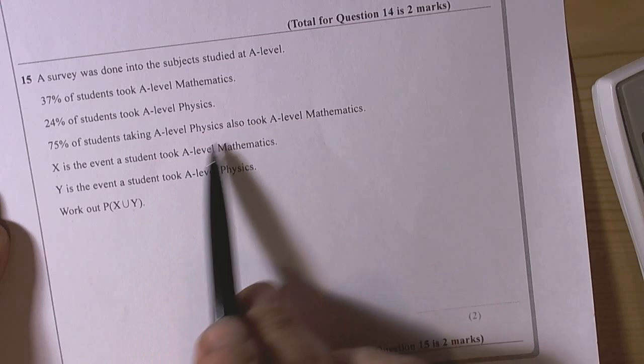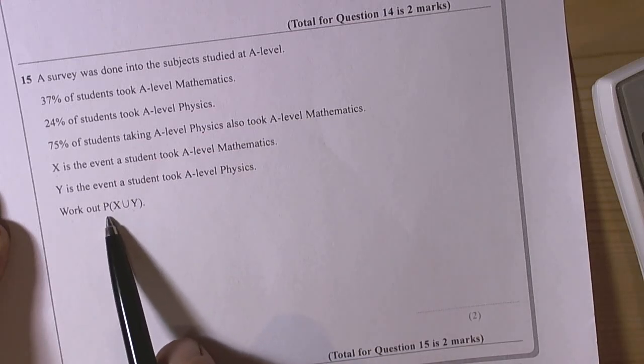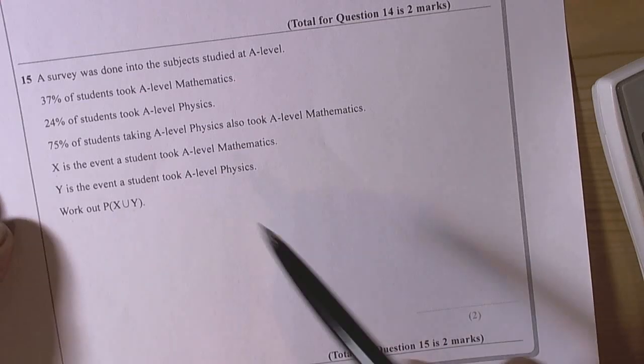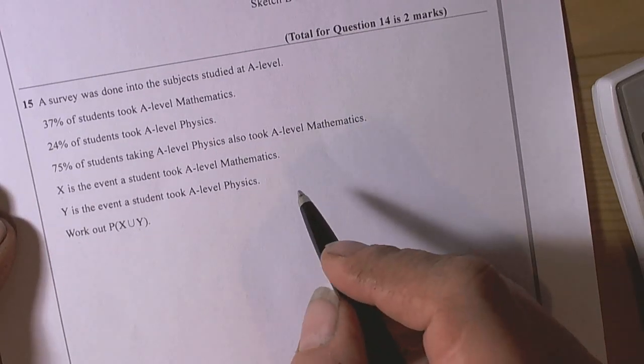So they're giving us some data here and when we see this we either use the formula or we might make it a little bit easier than formulas and draw out a Venn diagram to kind of see what's going on with the data.